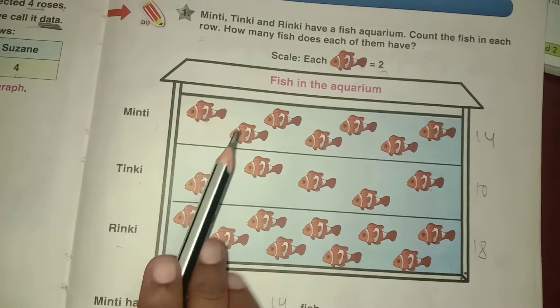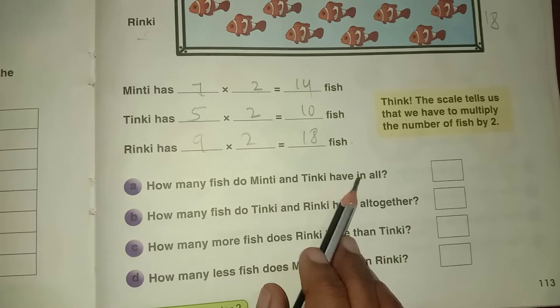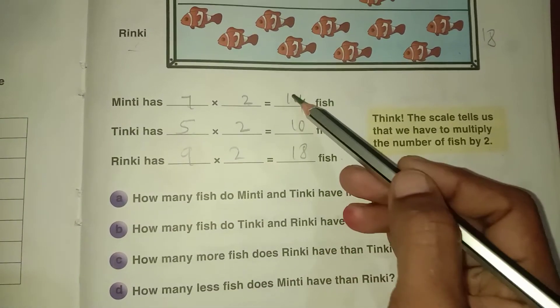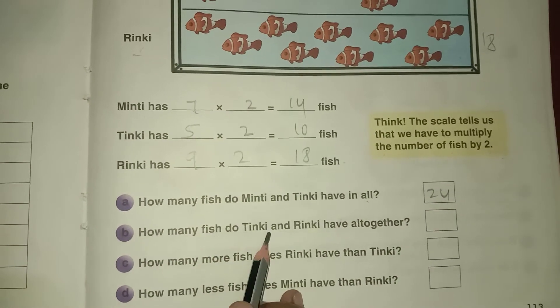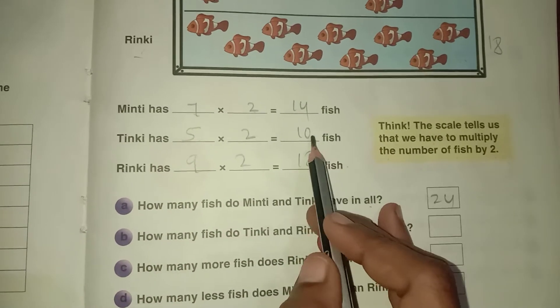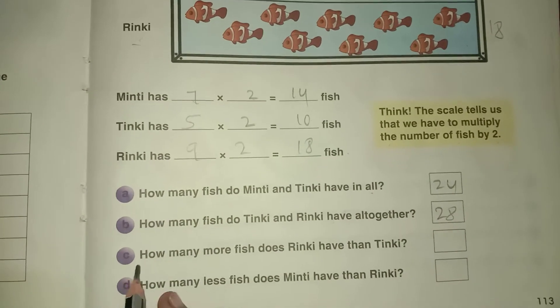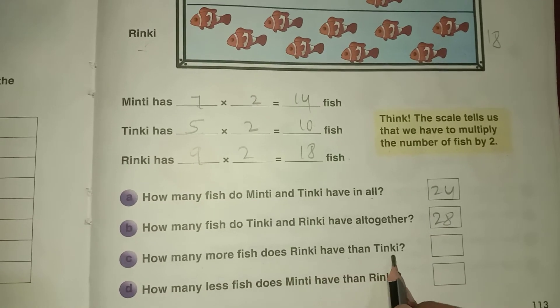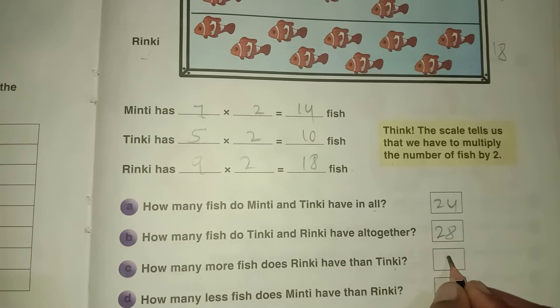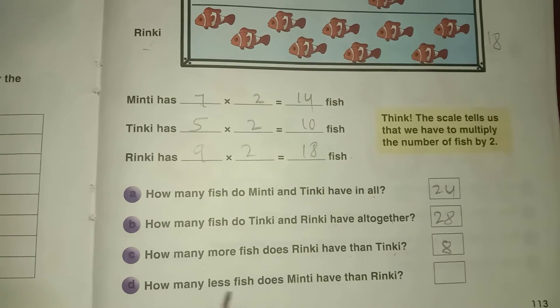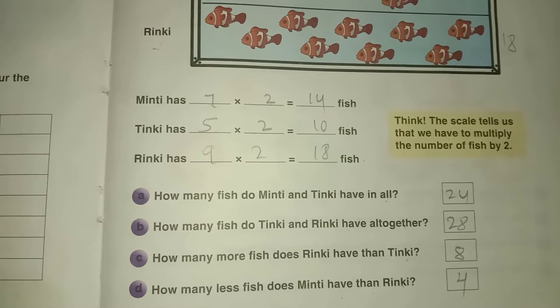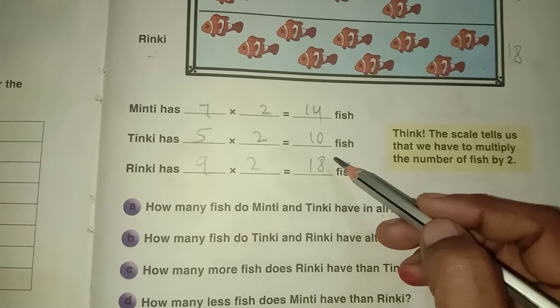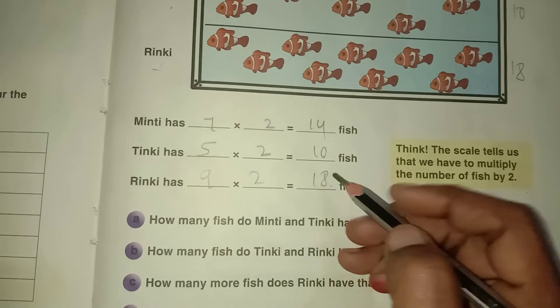How many fish do Minty and Tinky have in all? 14 plus 10, 24. How many fish do Tinky and Rinky have all together? 10 plus 18, 28. How many more fish does Rinky have than Tinky? 8. How many less fish does Minty have than Rinky? 4.